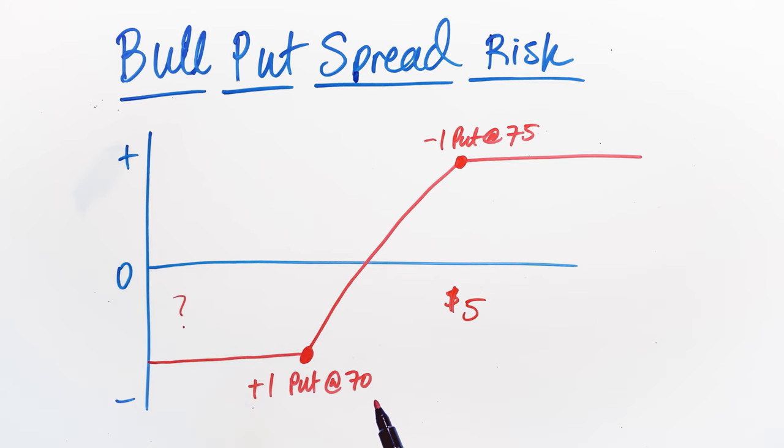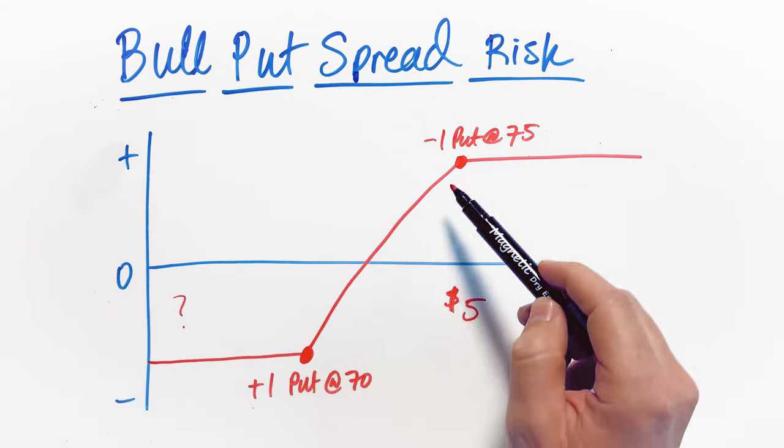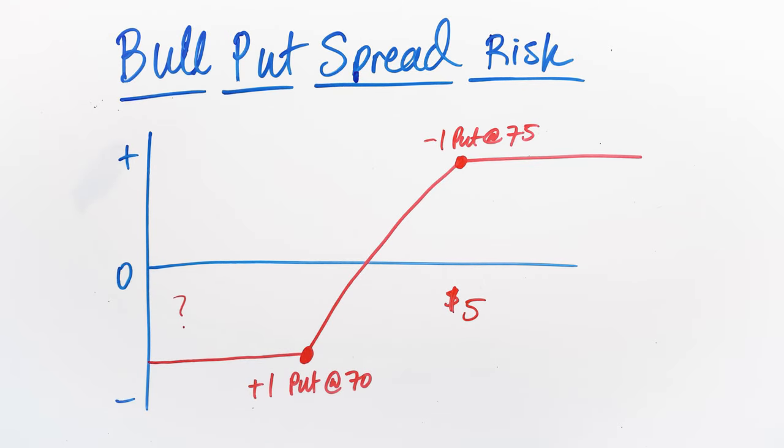Now, the reason it's $5 is because if we get to expiration and we have to deal with assignment of contracts, we would lose the difference between these two contract prices or strike prices and that would be the $5 that we lose for each of those particular shares. That's why the risk in this position starts calculating with this $5 premium in mind.